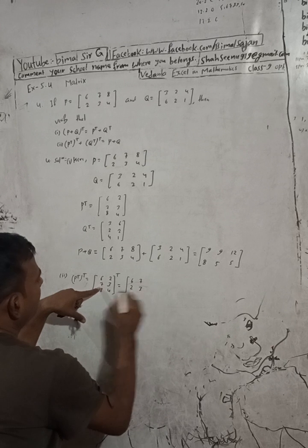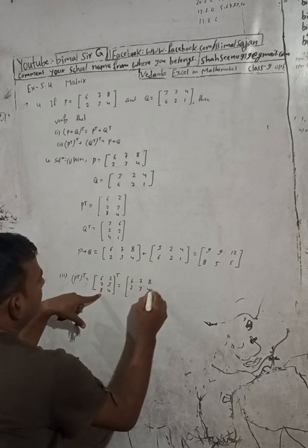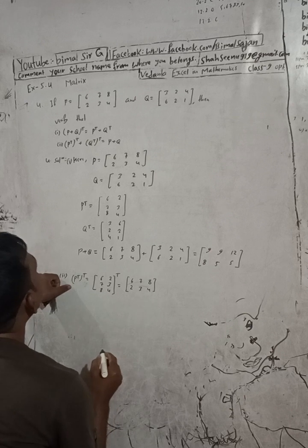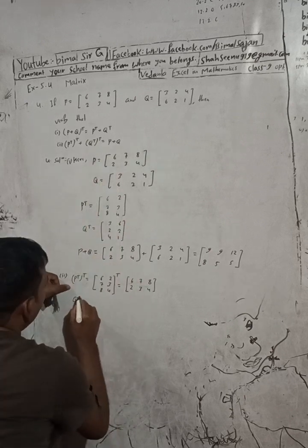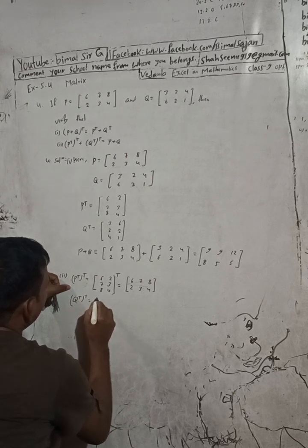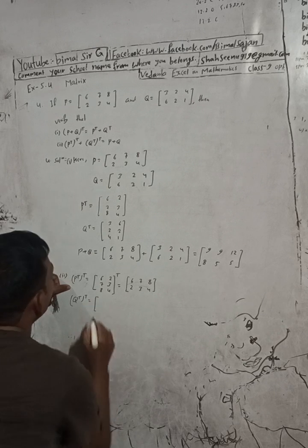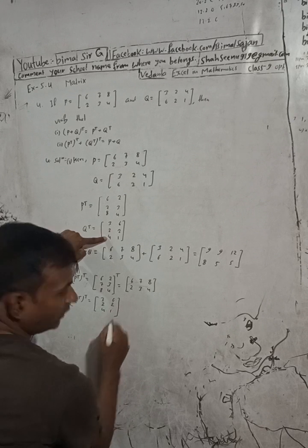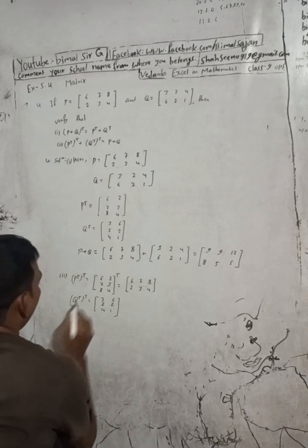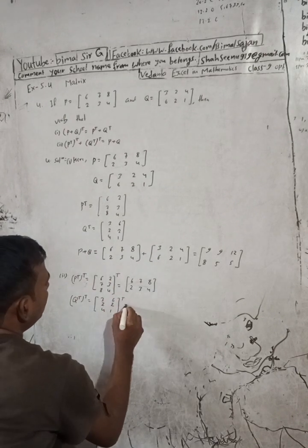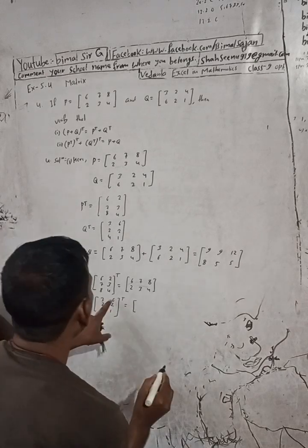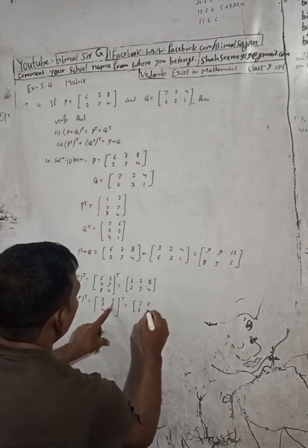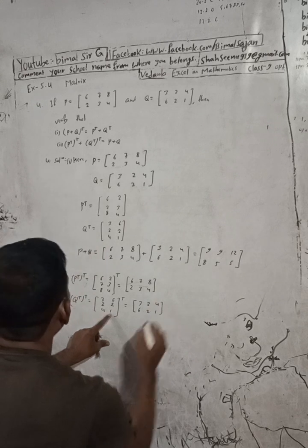For the second row, second column: [7 3], third row third column: [8 4]. This is P^T whole transpose. Now Q transpose whole transpose — Q^T is [3 6 / 2 2 / 4 1]. Taking its transpose again: interchange — first row [3 6] becomes first column, second row [2 2] becomes second column, third row [4 1] becomes third column. So (Q^T)^T = [3 2 4 / 6 2 1].